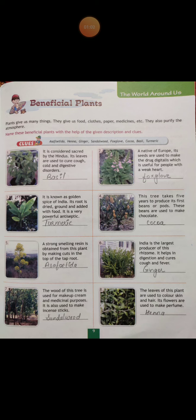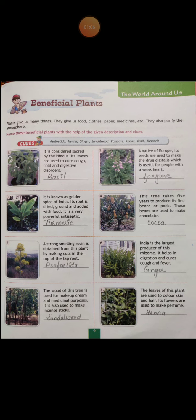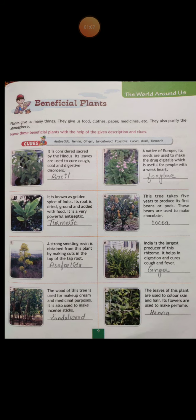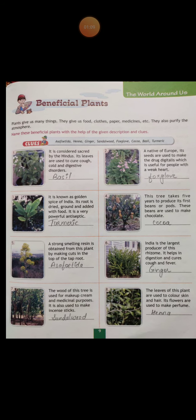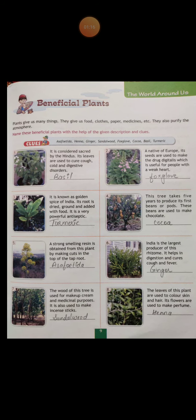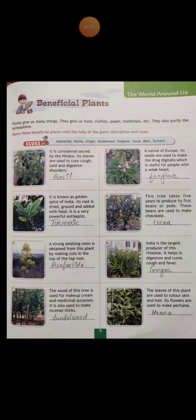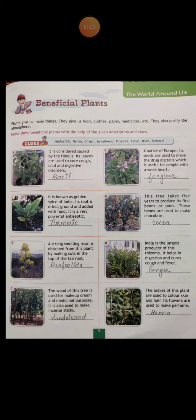The second one is a native of Europe. Its seeds are used to make the drug digitalis, which is useful for people with a weak heart. I hope you have already written the answers. In your holiday homework you will find out about each plant in detail. The name of this plant is foxglove.